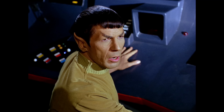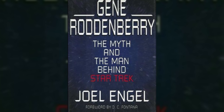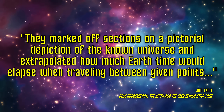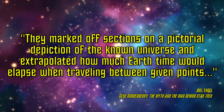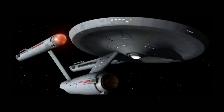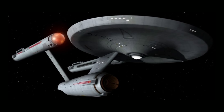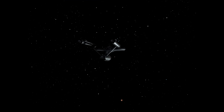He brought in Sam Peoples, who wrote the script for Where No Man Has Gone Before, to help him devise a method for calculating stardates. According to journalist Joel Engel in his book Gene Roddenberry: The Myth and the Man Behind Star Trek, the two men "marked off sections on a pictorial depiction of the known universe and extrapolated how much Earth time would elapse when traveling between given points. They took into account that the Enterprise's engines would violate the laws of relativity which hold that nothing can travel faster than light. They thus concluded that the time continuum would be different from place to place and would always differ from Earth time."